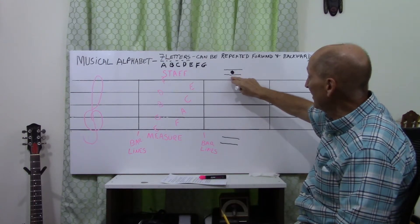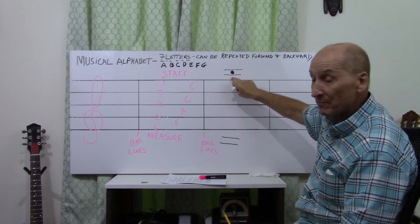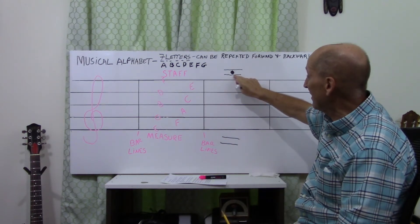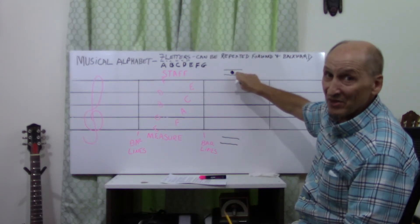In between here is a space. So, now it's G. What happens after G? A. What happens after A? And that's the name of the note, B.